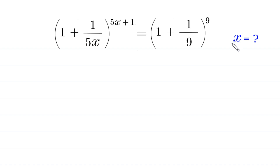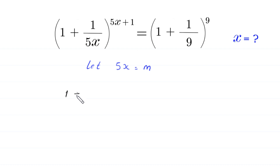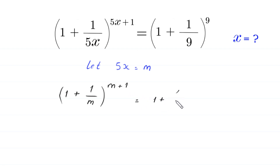So let us start. First, we suppose that 5 times x is equal to m. So this equation will become: 1 plus 1 over m, whole to the power m plus 1, is equal to 1 plus 1 over 9, whole to the power 9.